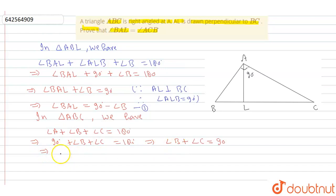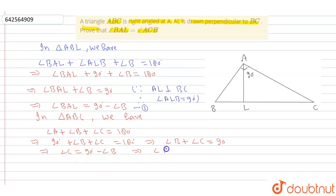From here, we can write angle C is equal to 90 degrees minus angle B, so angle ACB is equal to 90 degrees minus angle B. This will be equation number 2.